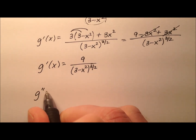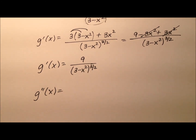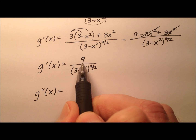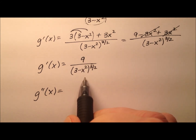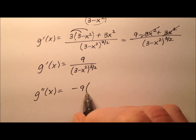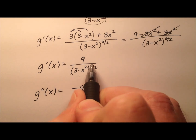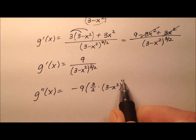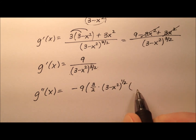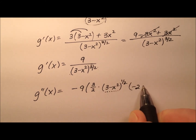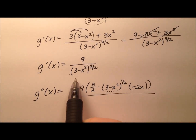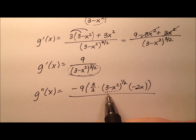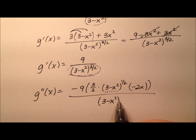In order to find the second derivative, we're going to use the chain rule and quotient rule once again. The quotient rule gives us low times the derivative of the high — but the derivative of the constant 9 is zero, so we can ignore all that. Then it's minus the numerator times the derivative of the denominator: the 3 halves comes out front, times 3 minus x squared to the power of 1 half, multiplied by the derivative of the inside which is negative 2x — that's the chain rule part — all over the square of the denominator. The denominator is to the power of 3 halves, so squaring it gives 3 minus x squared cubed.